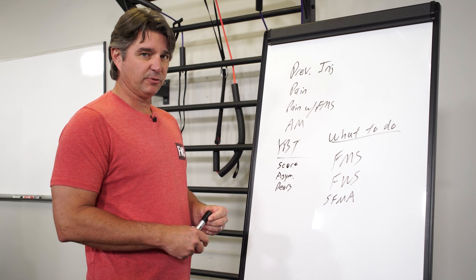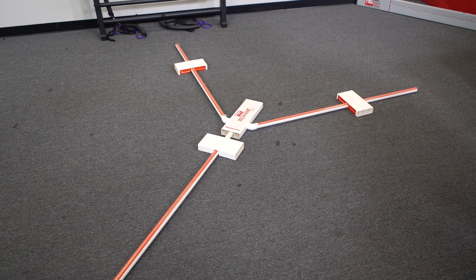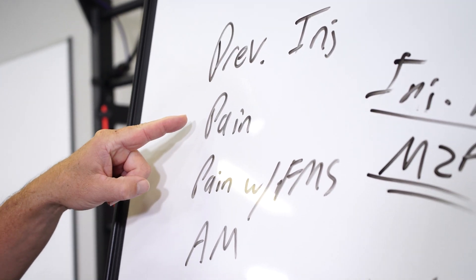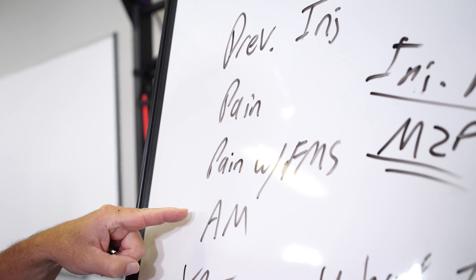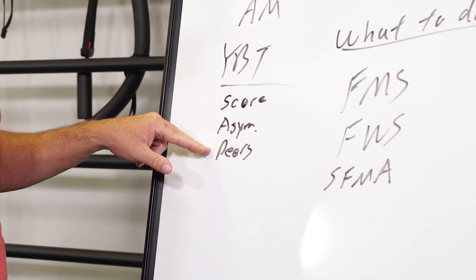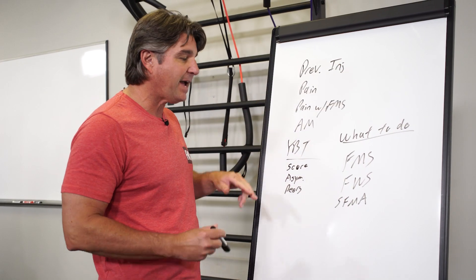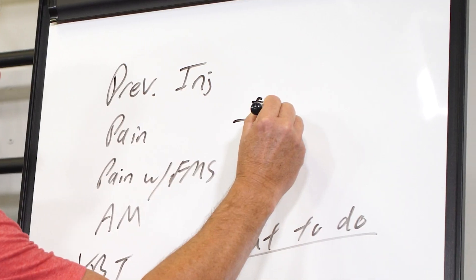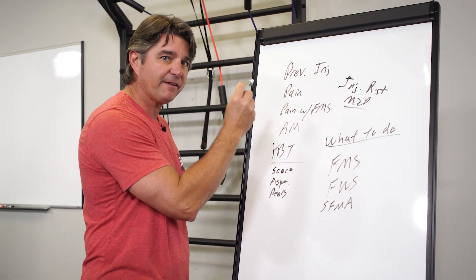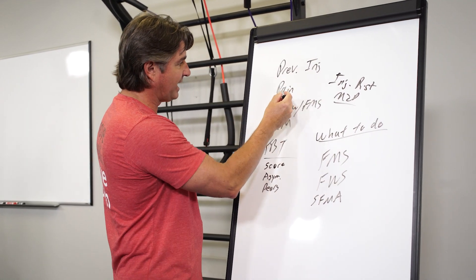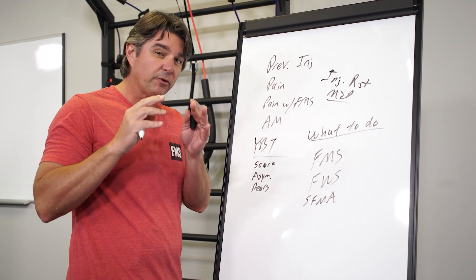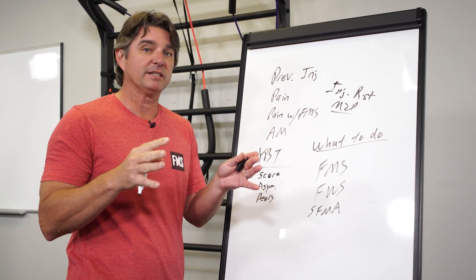I just showed you an example of how we do our wide balance test, which looks at three different directions at the end ranges of stability. Once you collect that data, it can be combined with your previous injuries, pain that a person may have, pain with the FMS, ankle mobility, and your wide balance test score results. We have a specific way we score it — including asymmetries — and we can compare that to your peer group. This information can give you your injury risk using our Move to Perform software, which uses research-based cut points as they relate to injury risk.